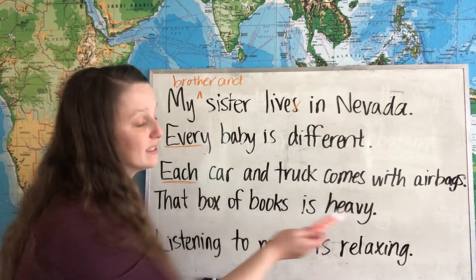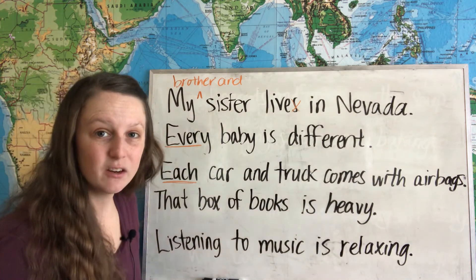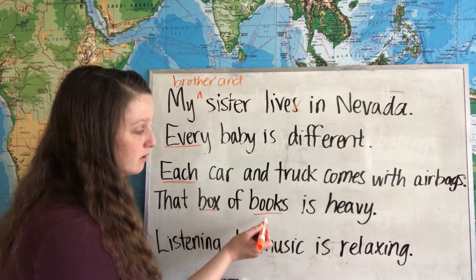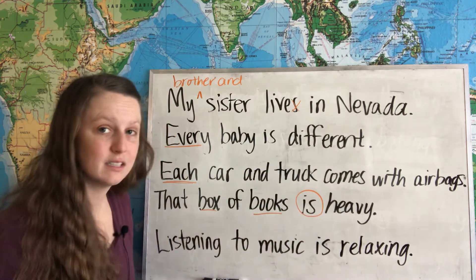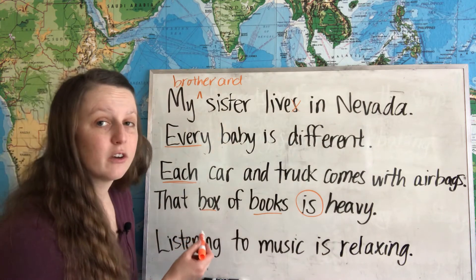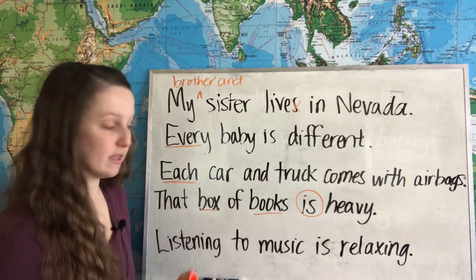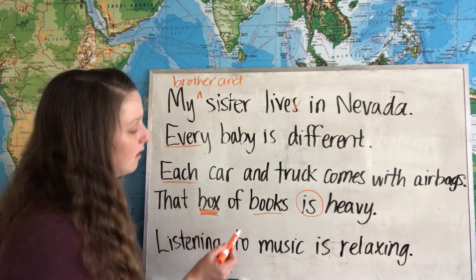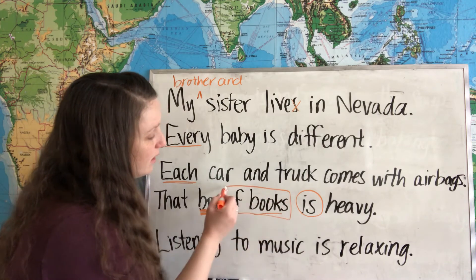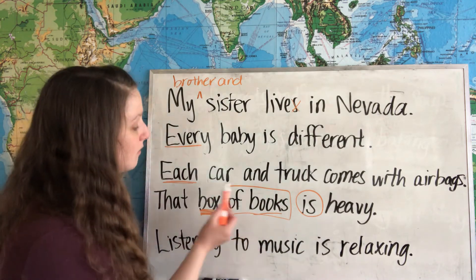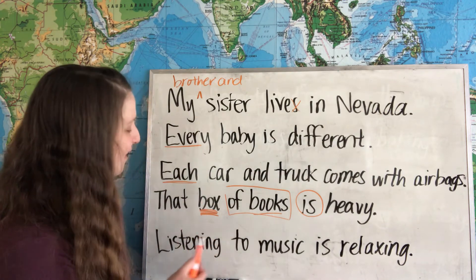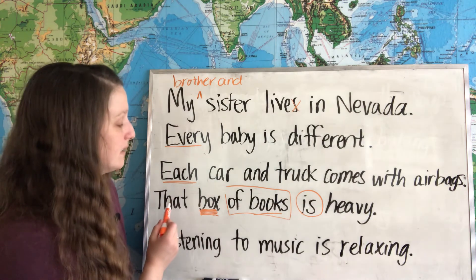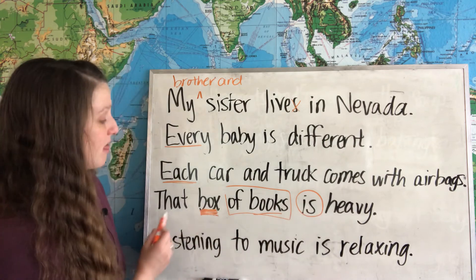Our next example is: that box of books is heavy. This sentence is a little bit confusing because we have two nouns — box and books — and our verb is 'is.' We have to look for the main subject noun. In this case it's 'box.' The phrase 'of books' is a prepositional phrase describing the box. So box — the one box — is the subject of this sentence. We can say: that box is heavy; that box of books is heavy.